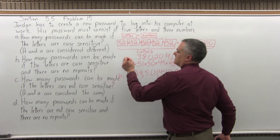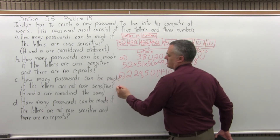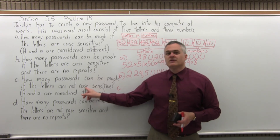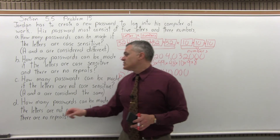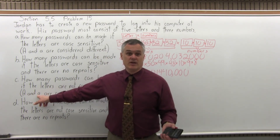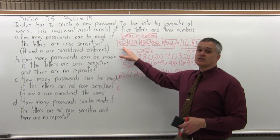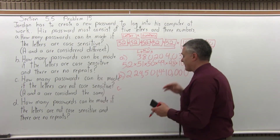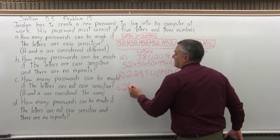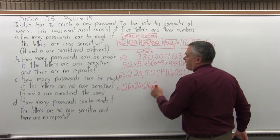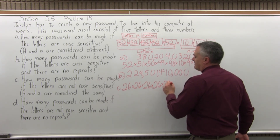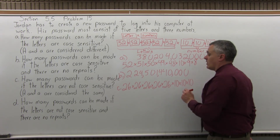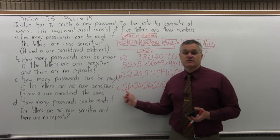Part C says how many passwords can be made if the letters are not case sensitive? Notice it doesn't mention anything about repeats. When the letters are not case sensitive, capital A and lowercase a are considered the same letter. So our number of options for letters goes back down to twenty-six — it's not fifty-two anymore, you're not counting capitals and lowercase differently. To choose your five letters, the number of options would be five twenty-sixes multiplied together. And since it doesn't mention repeats, you can repeat the numbers, so you'd have twenty-six options for each letter.